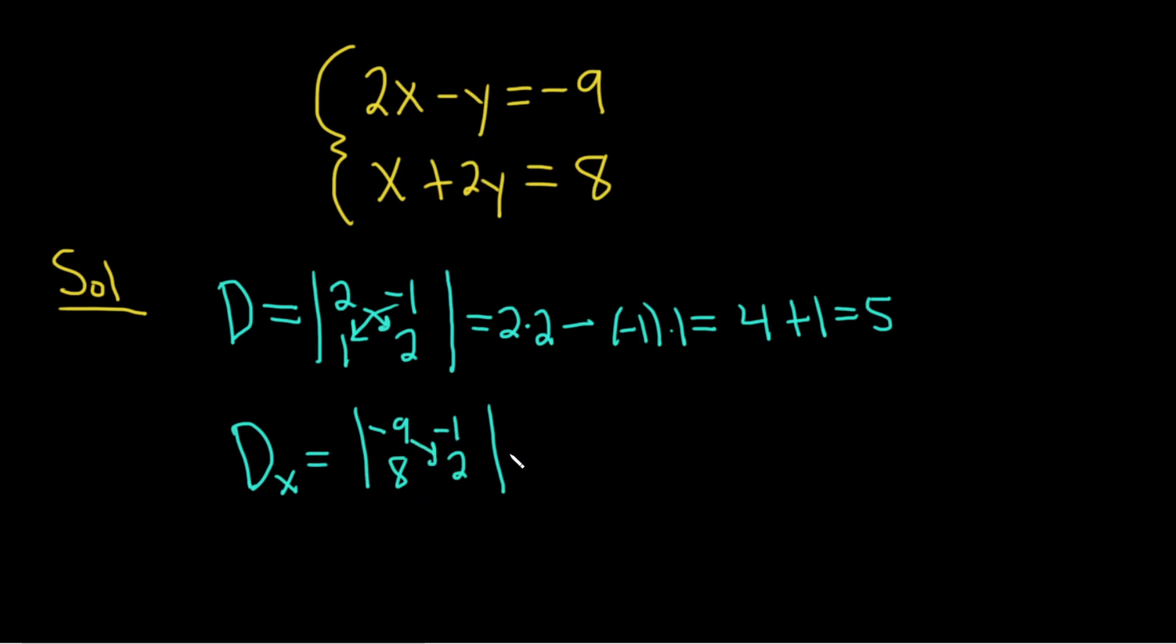Then we multiply negative 9 times 2 minus negative 1 times 8. This is equal to negative 18 plus 8, which is negative 10. So that would be Big D sub x.